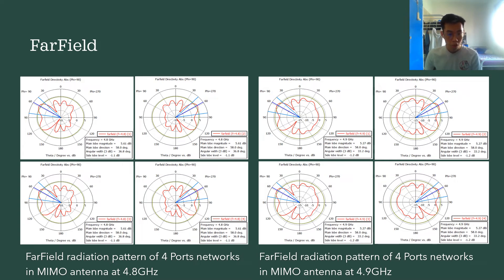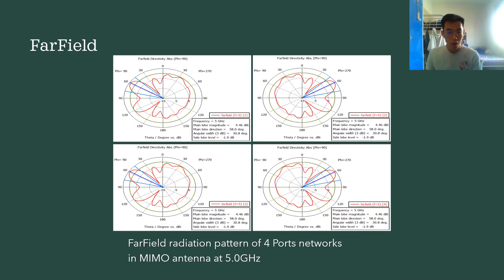For the radiation pattern of 4.8 GHz, it possesses a smaller radiation pattern compared to the 4.9 GHz radiation pattern, meaning it has smaller far-field coverage. For the far field radiation pattern of 5.0 GHz, it possesses the largest radiation pattern with a main lobe magnitude of -4.96 dBi. It has the same main lobe direction as 4.8 GHz and 4.9 GHz, but the angular width and side lobe level are much smaller.